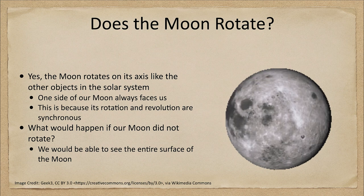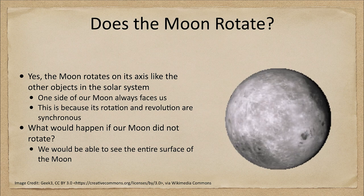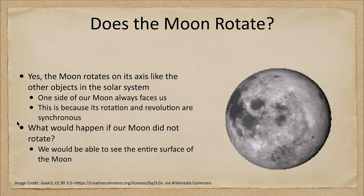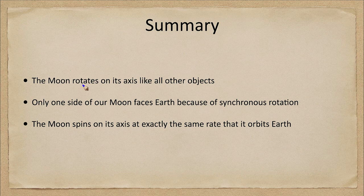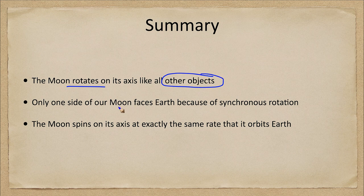However, because it is rotating and is synchronous with its orbit, we'd never see one side of the moon directly from Earth. So let's go ahead and finish up with the summary. What we found this time is that yes, the moon does rotate. It rotates on its axis just like every other object in the solar system.